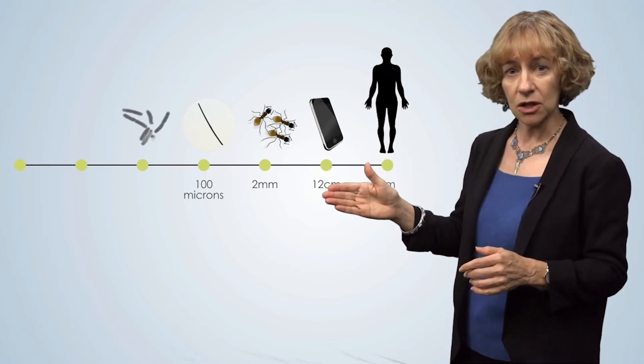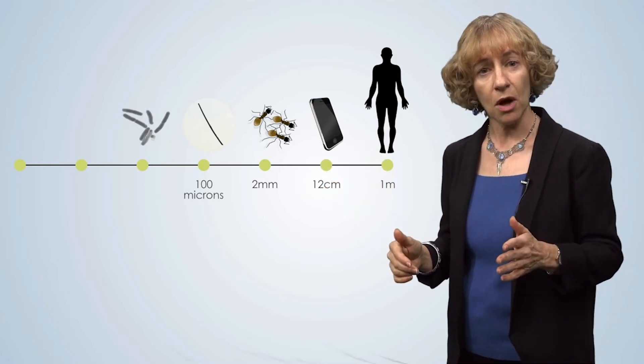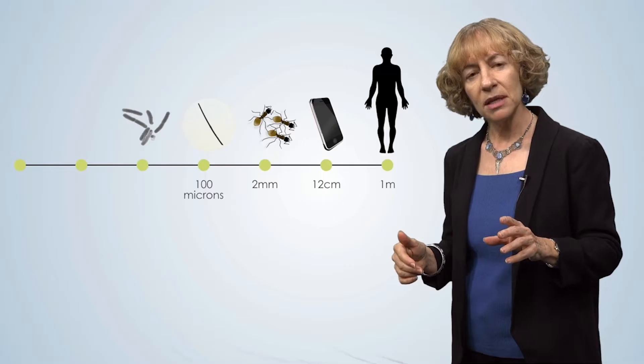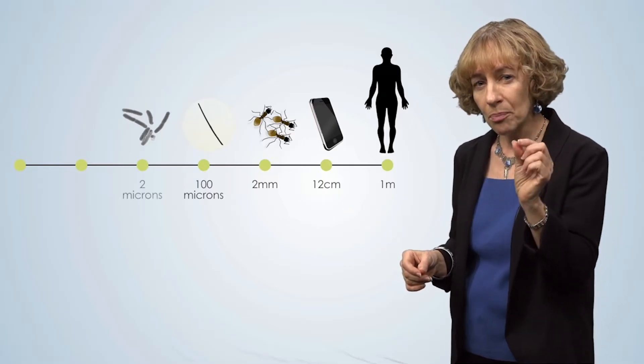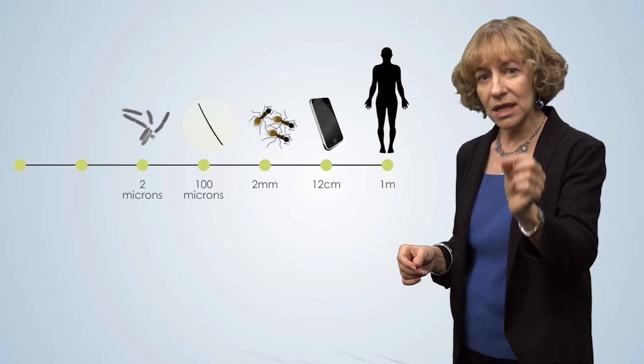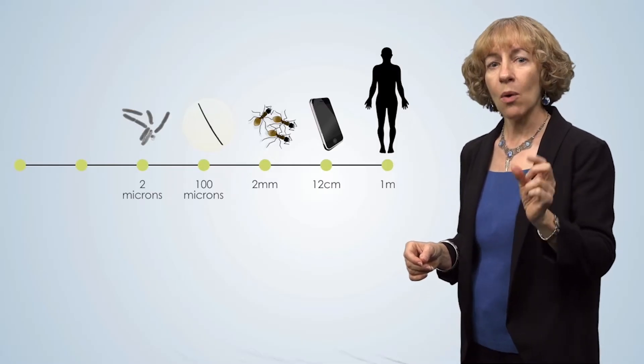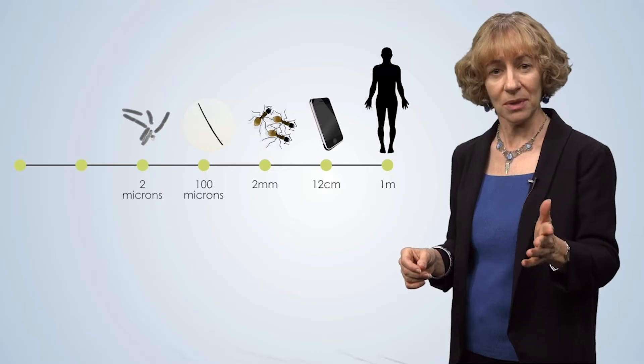Now we see bacteria here, such as E. coli, are even smaller. These bacteria have been imaged with an electron microscope, and the bacteria are about 2 microns in length. So an E. coli bacteria are about 1 million times smaller than a human.